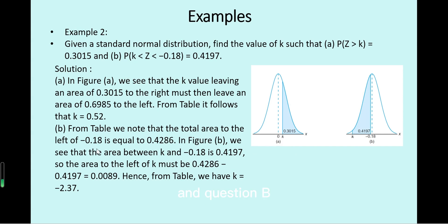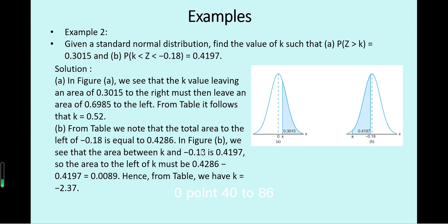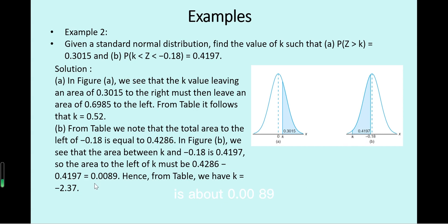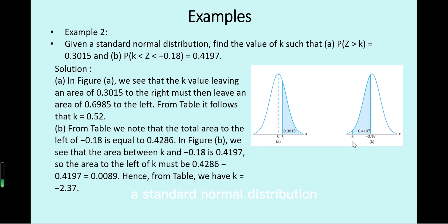For question (b), find k such that P(k < z < -0.18) = 0.4197. From the table, the area to the left of -0.18 is 0.4286. Since the shaded area between k and -0.18 is 0.4197, the remaining small white area is about 0.0089. From the table, k = -2.37, which has a very small cumulative probability close to zero.